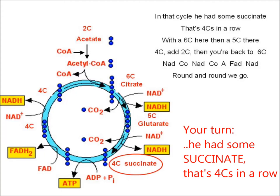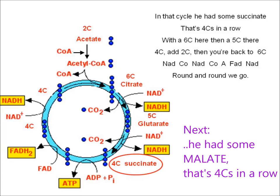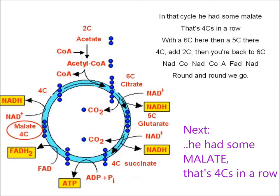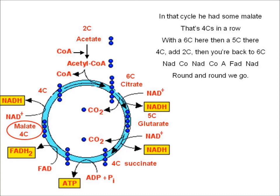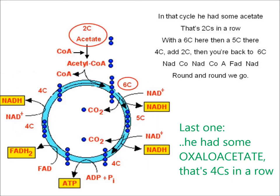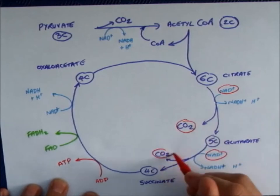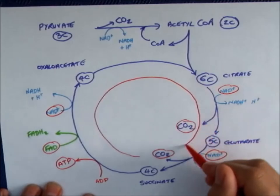[Song repeats the glutarate verse with the same pattern: NAD, CO, NAD, CO, A, FAD, NAD, describing the carbon cycle from 6C to 5C to 4C and back to 6C multiple times for learning reinforcement.]